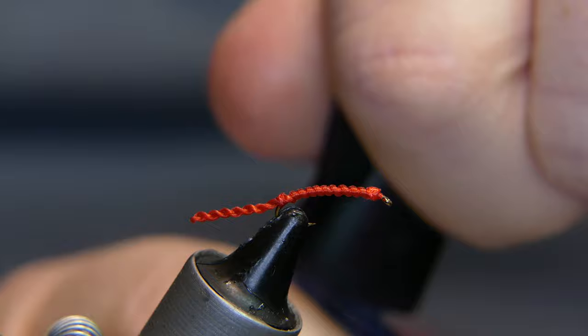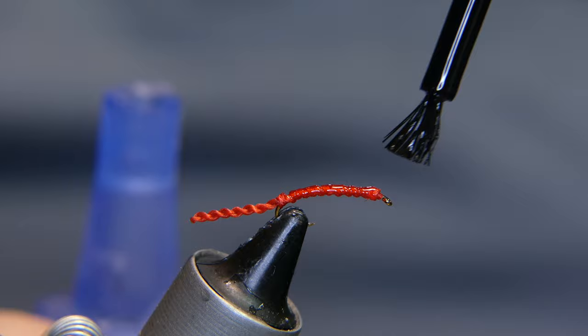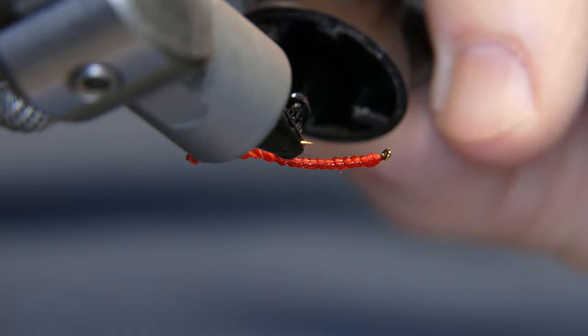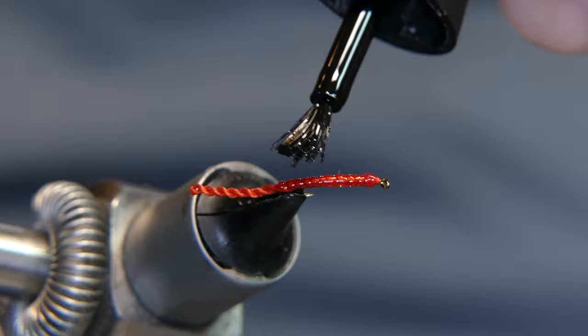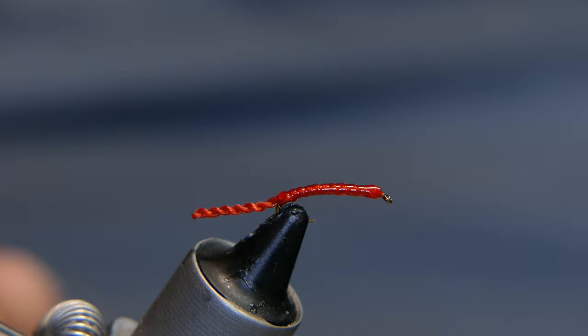Just a nice, tiny, thin coat of the glue on the body. And that's all you need. And there you go. You got yourself a bloodworm.